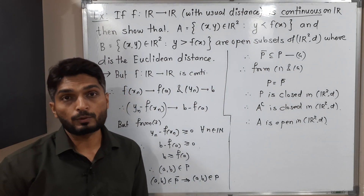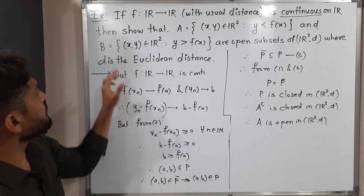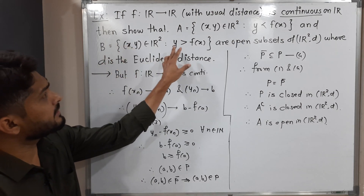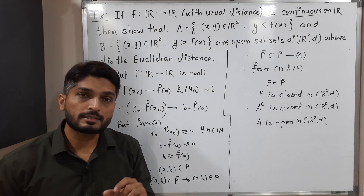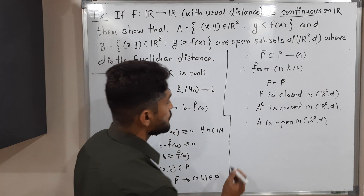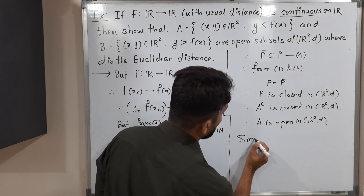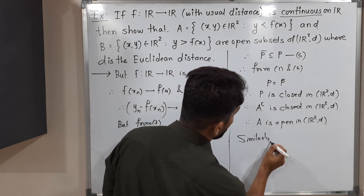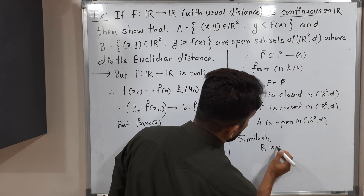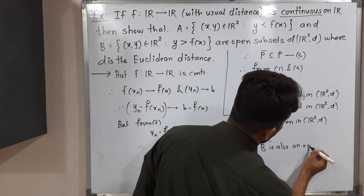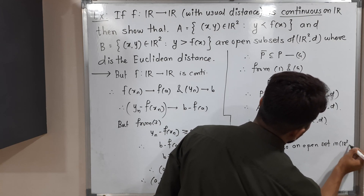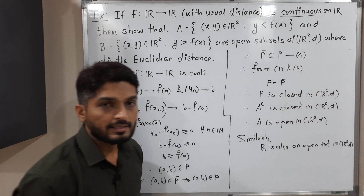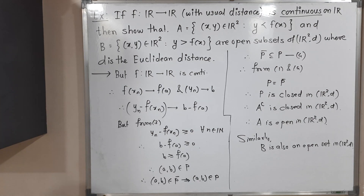We have finally proved the given set A is an open subset of ℝ² with the usual Euclidean metric. In the case of set B we have the same argument — just the condition is different. So in the same way we can prove set B is also an open subset of ℝ². Thus we have proved that both given sets A and B are open sets in ℝ² with Euclidean distance d.